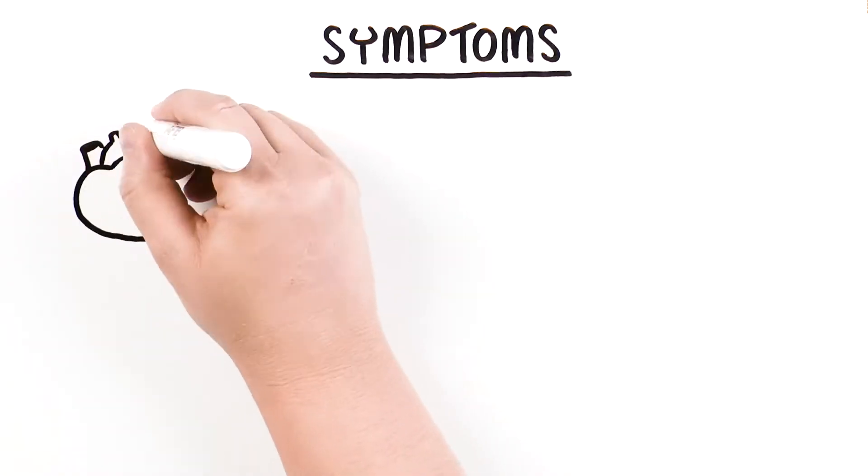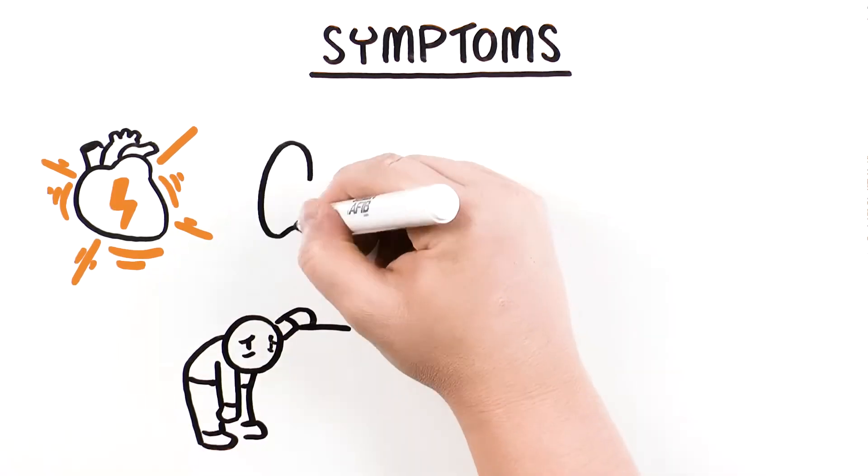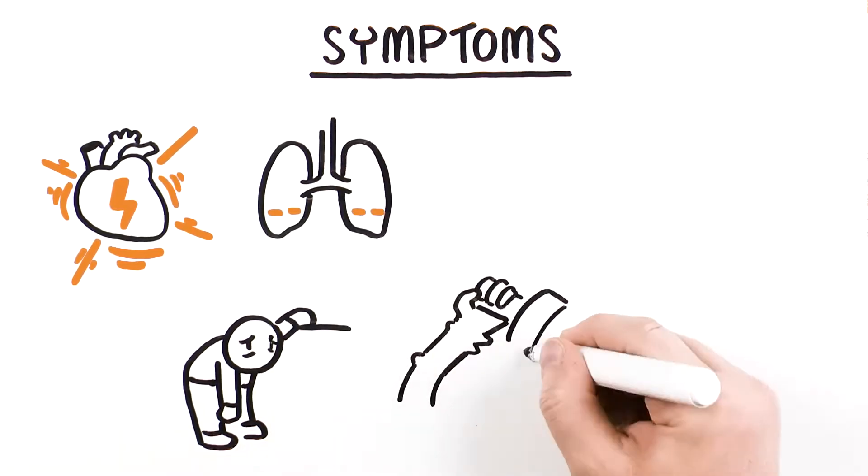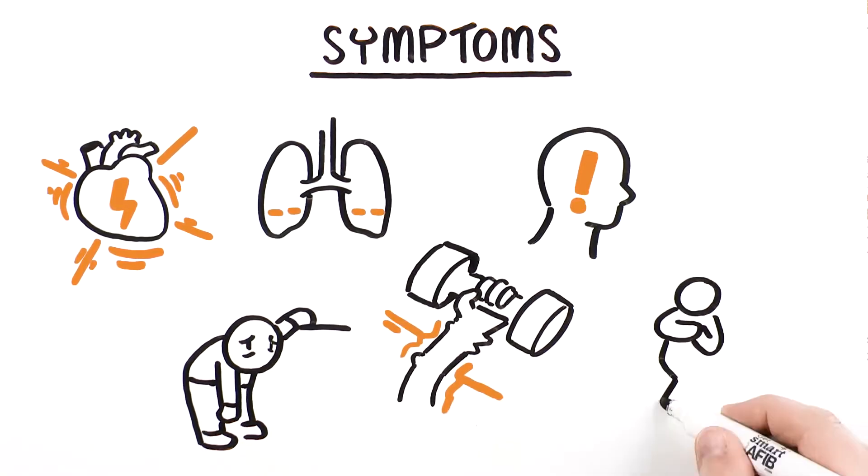Symptoms of AFib include heart palpitations, fatigue, shortness of breath, difficulty exercising, anxiety, chest pain, and dizziness.